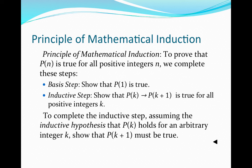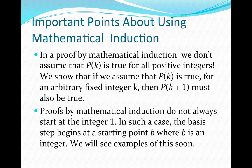It often seems like a proof by mathematical induction is done by magic, or that the assumption that P(k) holds is basically assuming what we're trying to prove and therefore is not a valid proof. But in fact, what's very important is that we are not assuming P(k) is true for all positive integers. Instead, we are assuming P(k) is true for an arbitrary but fixed integer k — only representative of one integer — and we use that assumption to show how to prove it for the next integer in the list.